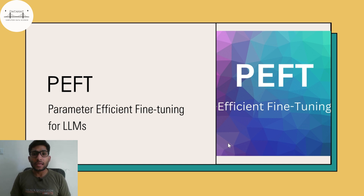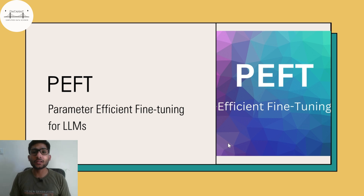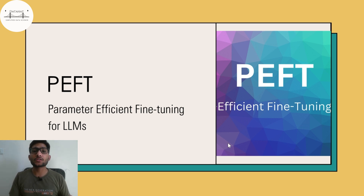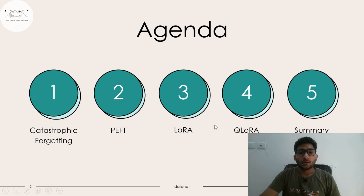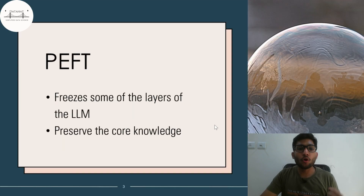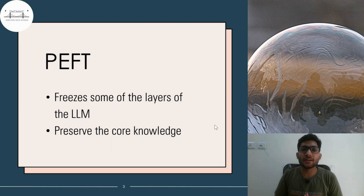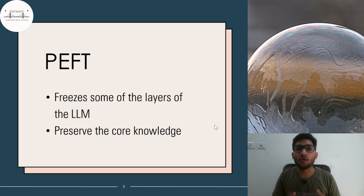Parameter-efficient fine-tuning is a class of techniques in order to minimize catastrophic forgetting while fine-tuning large language models. The very reason you should focus on this video is because whenever we go for fine-tuning large language models from the implementation perspective — when we talk about LoRA and QLoRA — understanding how these work will help you in choosing the right technique and applying them effectively. PEFT basically freezes some of the layers of the large language model, thereby preserving the core knowledge of the model and training additional data on some of the other layers.